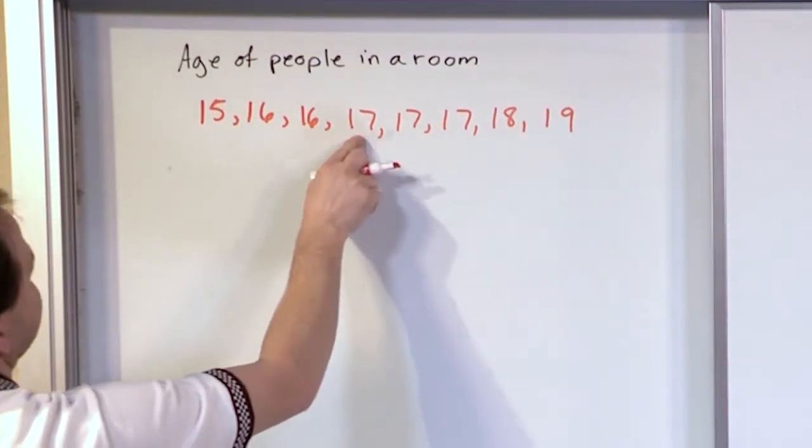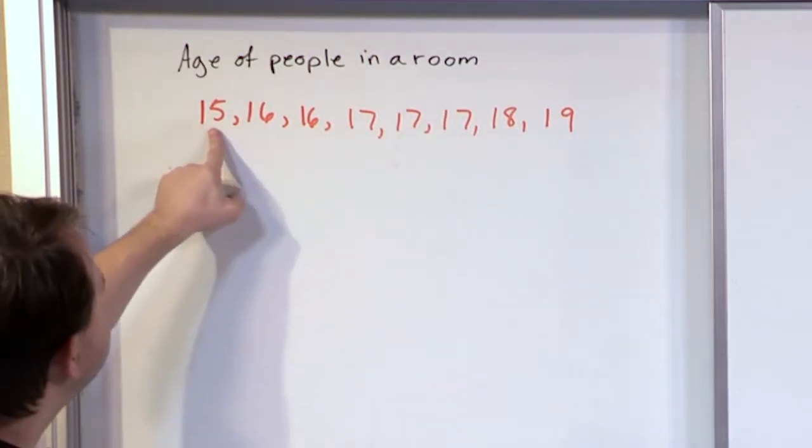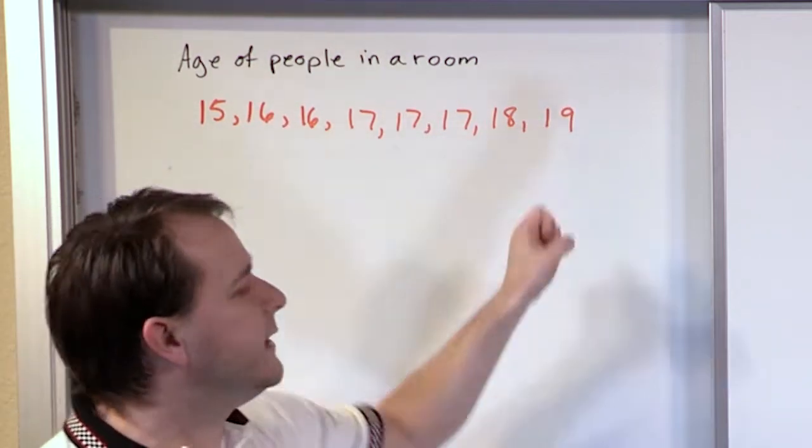So we have 8 people in our birthday party or whatever it is. And we have 1 fifteen-year-old, 2 sixteen-year-olds, 3 seventeen-year-olds, 1 eighteen-year-old, 1 nineteen-year-old.